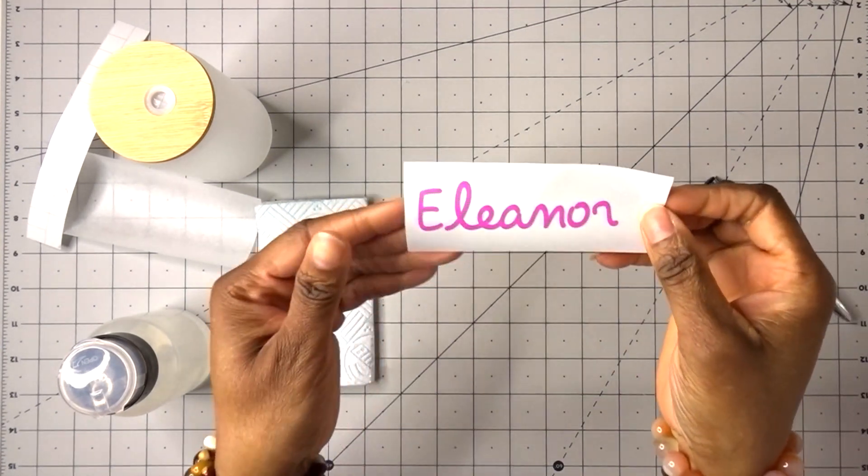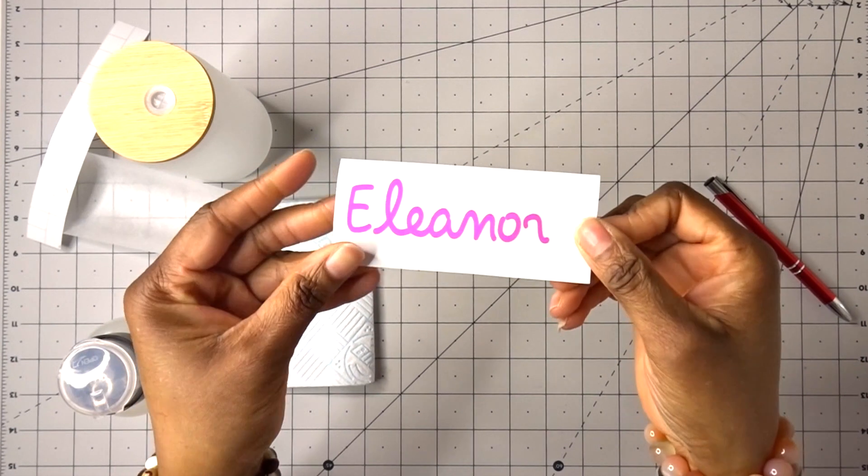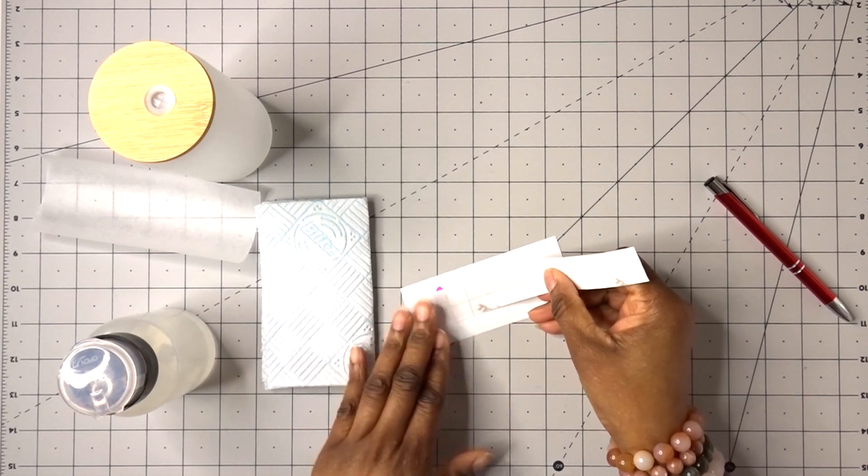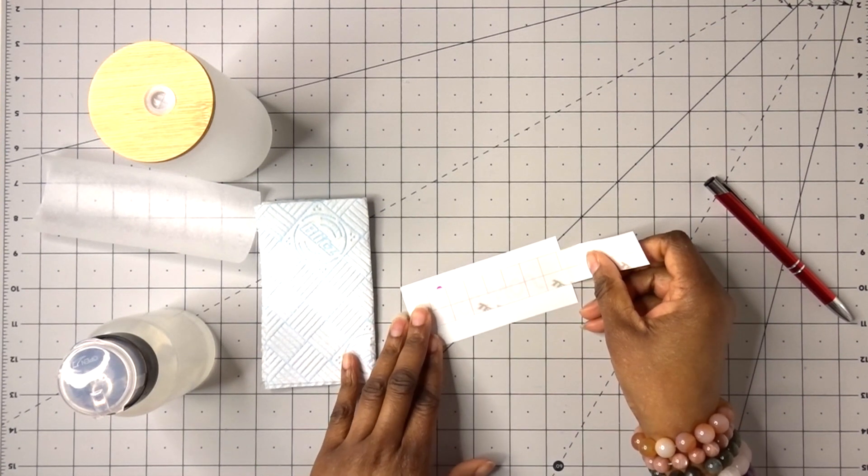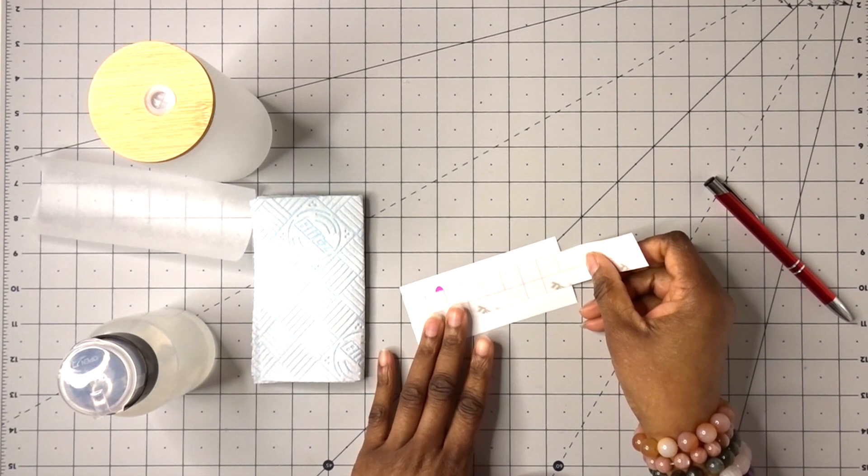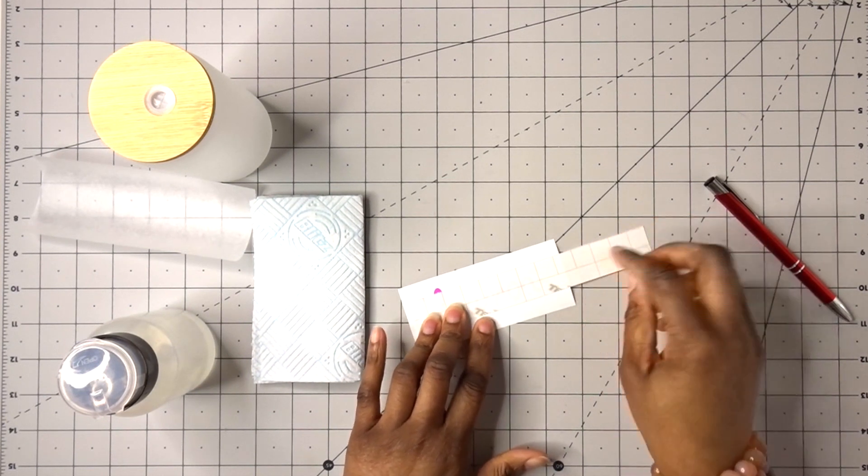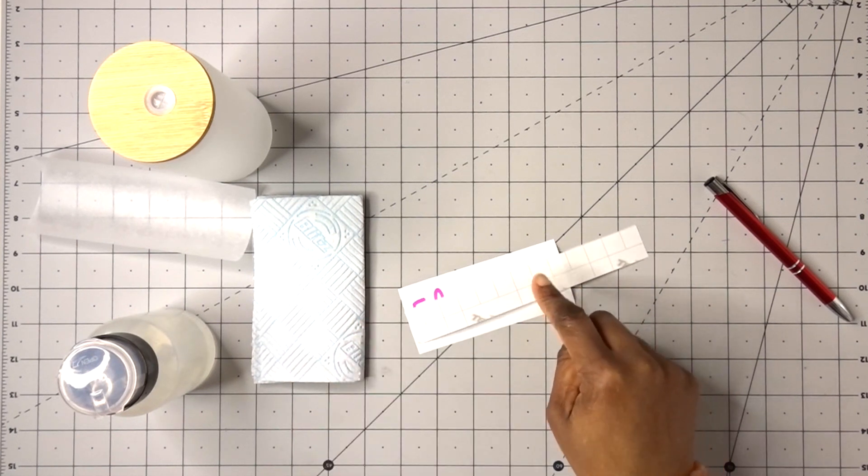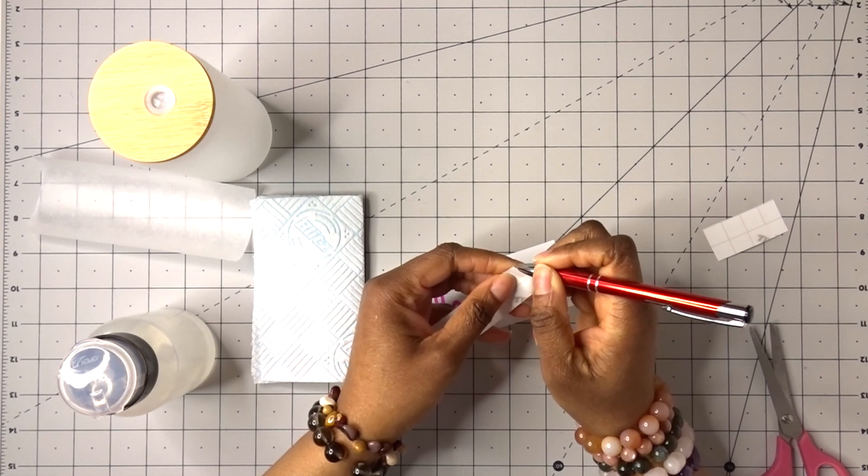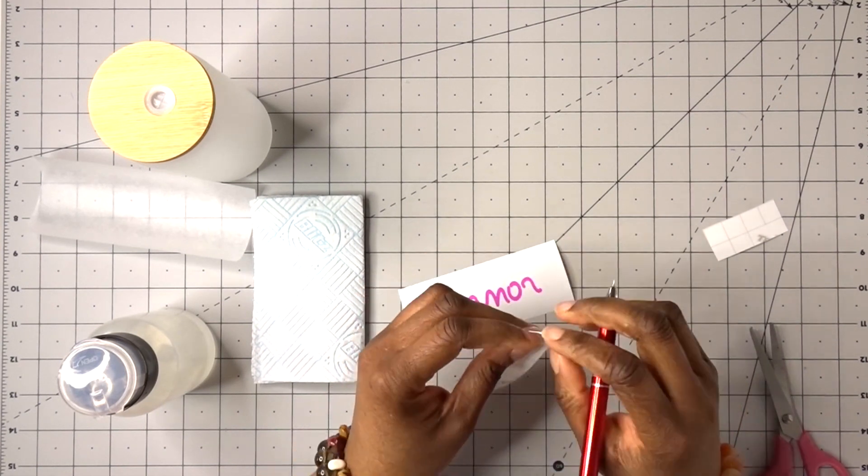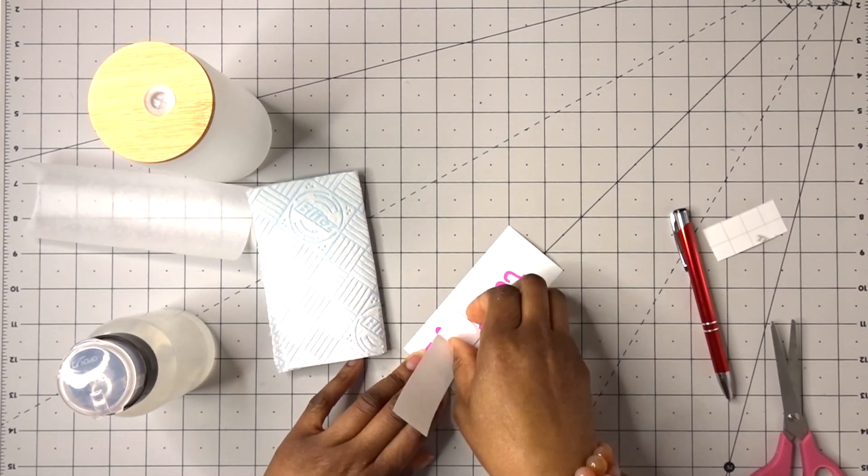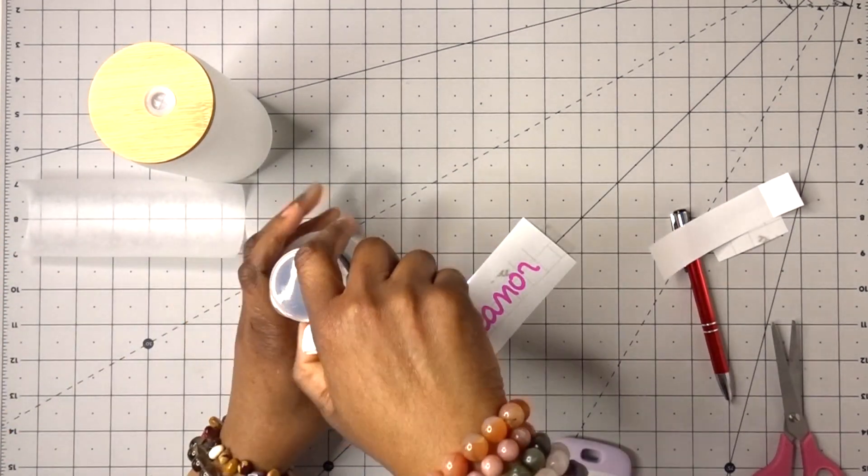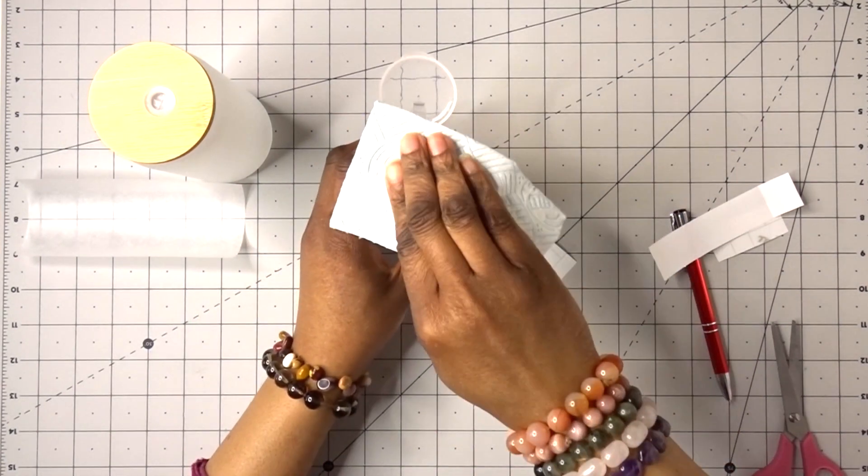So that weeded really nicely. Now I'm going to use my transfer tape, hopefully it's big enough, just about but that will be okay. I'm just going to cut that bit off because I don't need that bit. Okay, I'm going to quickly clean my glass, should have done that first.